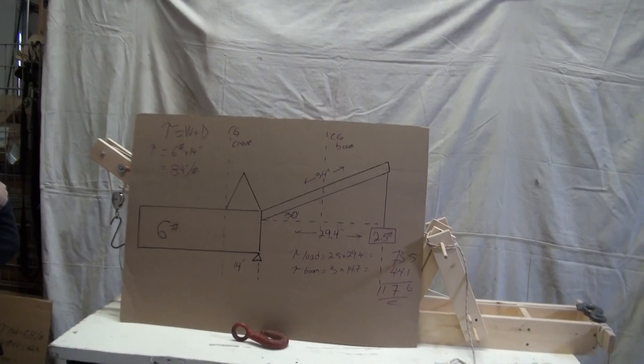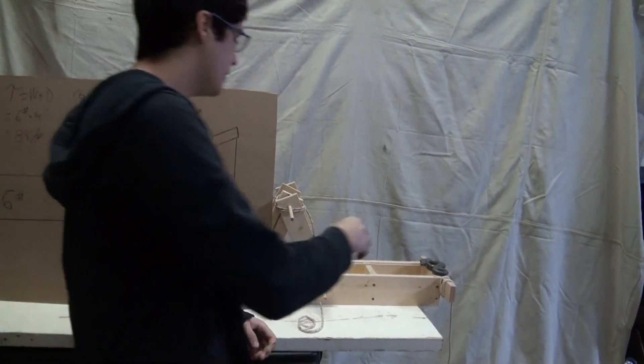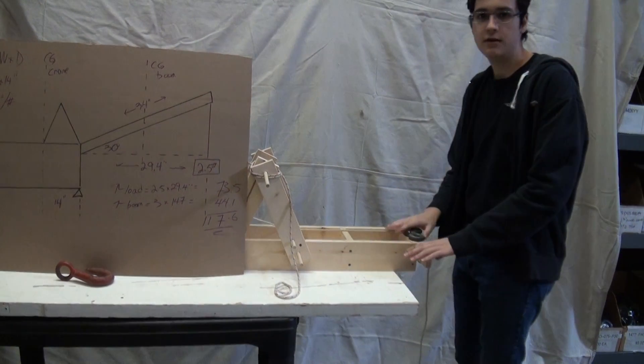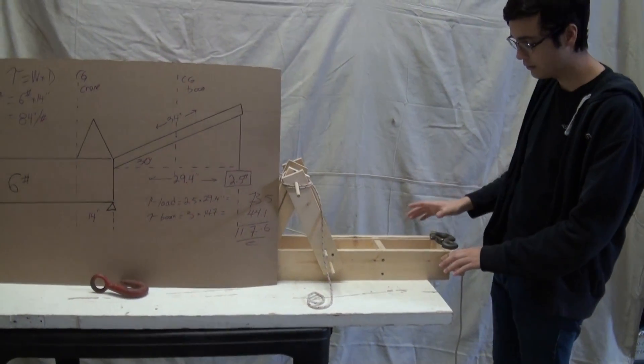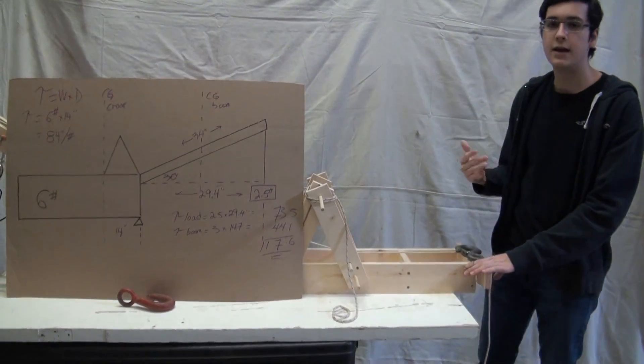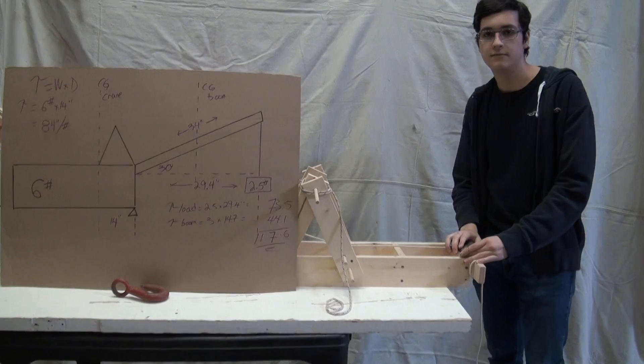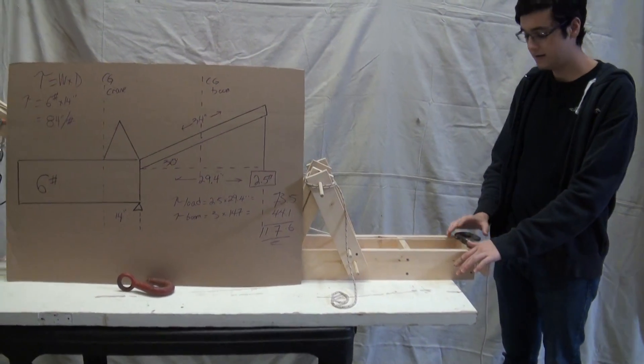We need 92 inch pounds of torque, and where are we going to put it? Once again, we're going to put that weight as far back as we can. Maximize the distance. And this is still 30 inches back, and we need 92 inch pounds of torque, so we only need about 3 pounds. 92 divided by 30 is about 3.